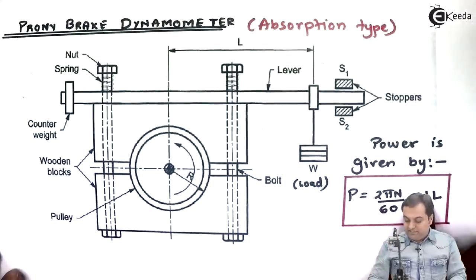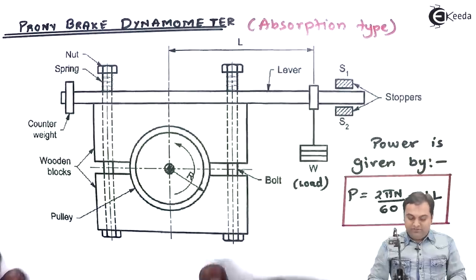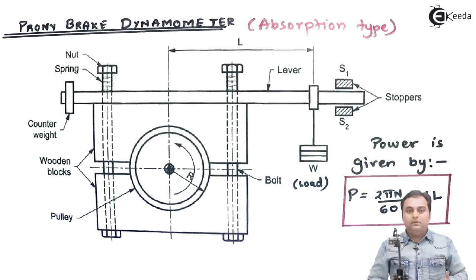Power is calculated by the formula: P = 2πN/60 × W × L for Prony brake dynamometer, where W is the load which we are attaching at the end of the lever and L is the length of the lever. So in this way we measure power by Prony brake dynamometer.